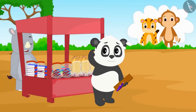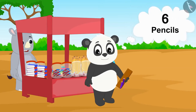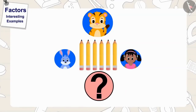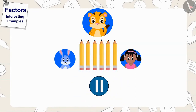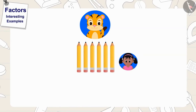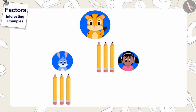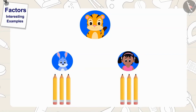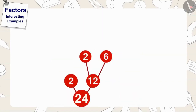Now, Golu is wondering if those two friends will be able to share six pencils equally. Children, can you find an answer to this question? If you want, you can stop the video and think about the answer. Yes, those friends can distribute their six pencils equally to two friends by giving them three pencils each. We found this answer by finding the factors of six. Golu made two lines and circles and wrote the numbers two and three in it.